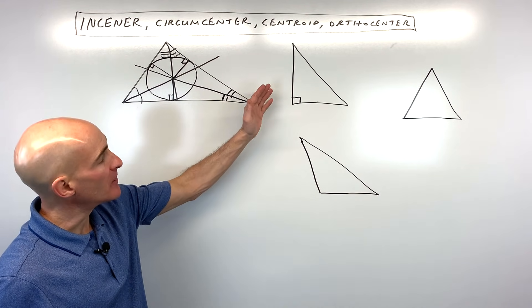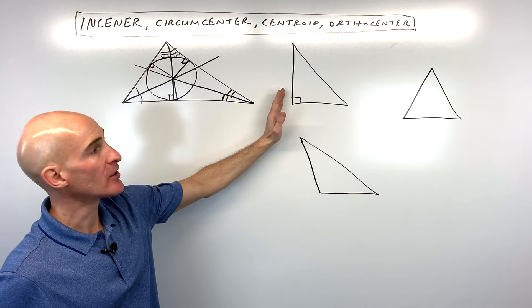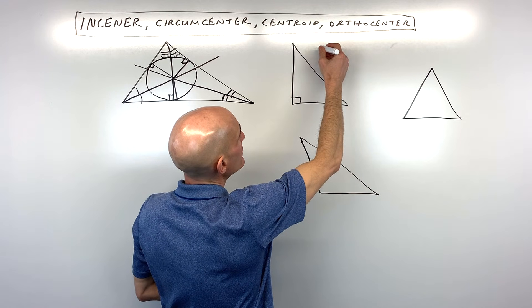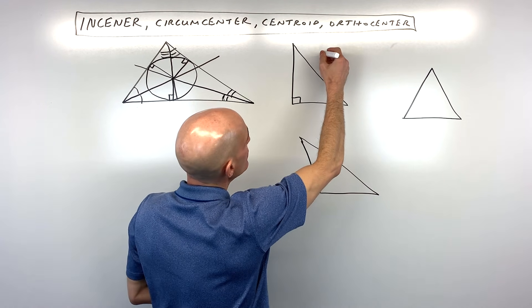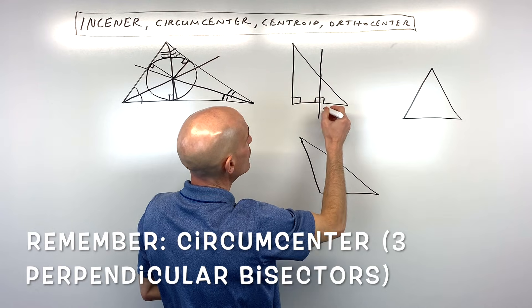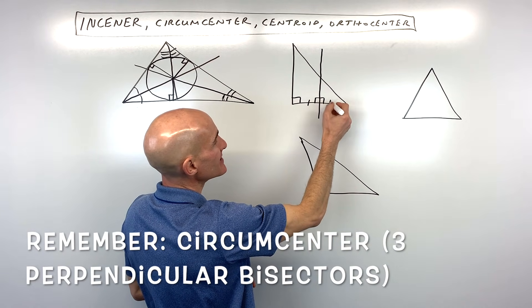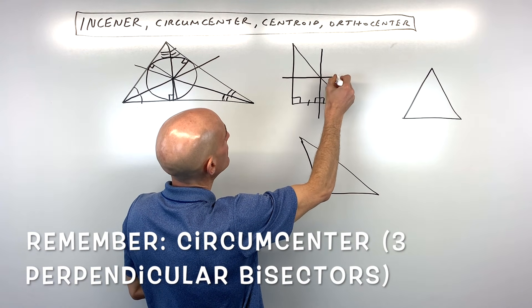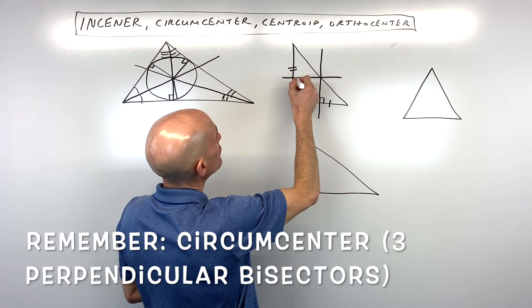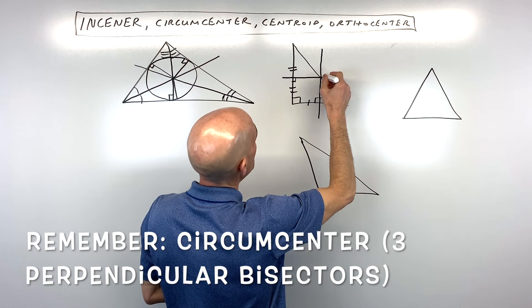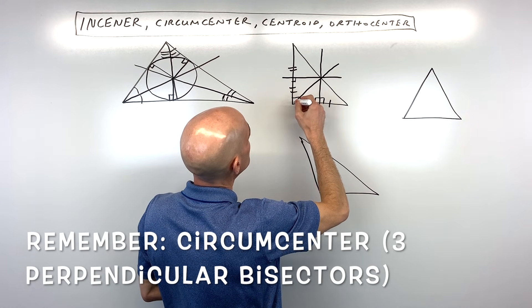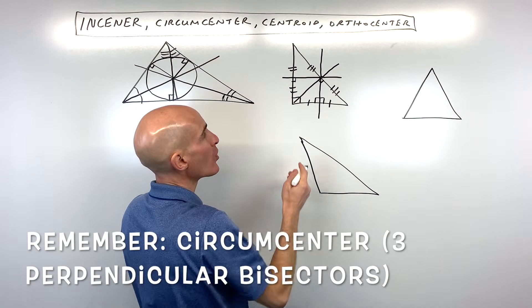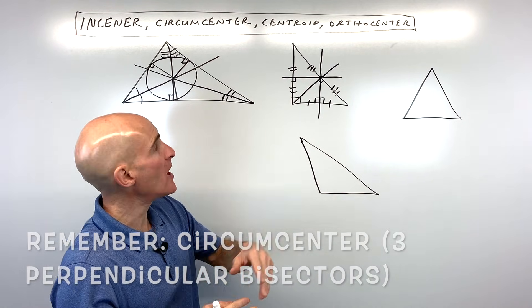Now let's talk about the circumcenter. When we talk about the circumcenter, what we're talking about are the three perpendicular bisectors. When you think of perpendicular, we think of a right angle. When we think of a bisector, we think of it as cutting the side in half, or bisecting. And so if we draw the three perpendicular bisectors — let me see if I can draw this accurately here for us — what we end up with at this point where all three of those perpendicular bisectors cross is called the circumcenter.